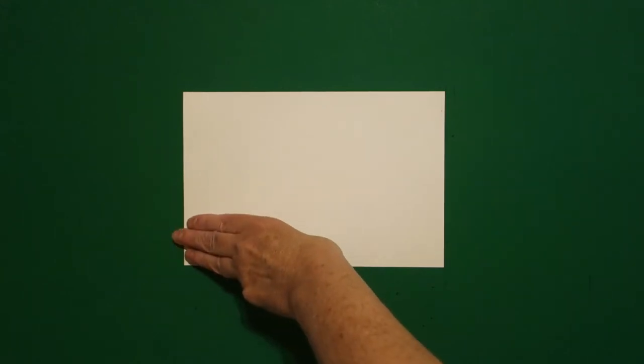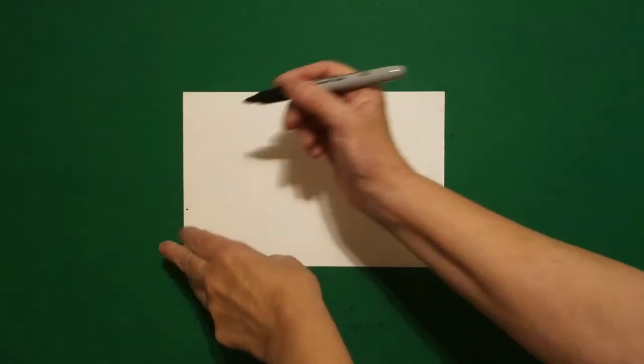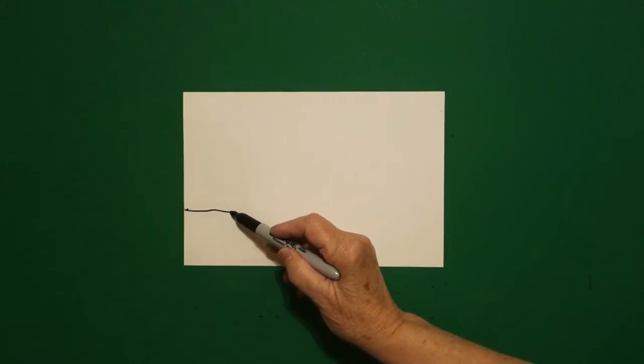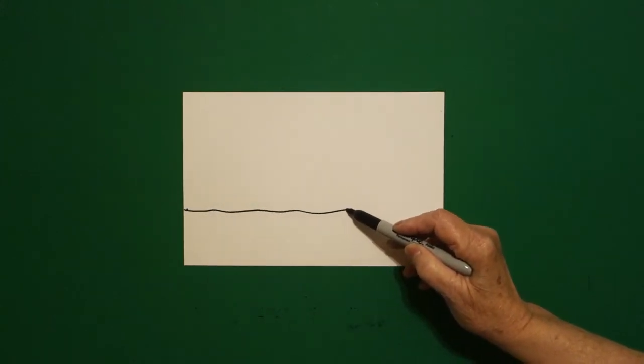I take three fingers here on the left and I'm going to put a dot. And from that dot I'm going to draw a slightly wavy line all the way across.